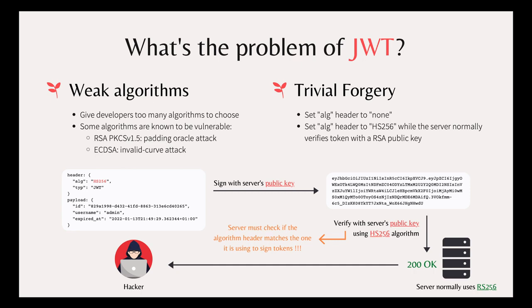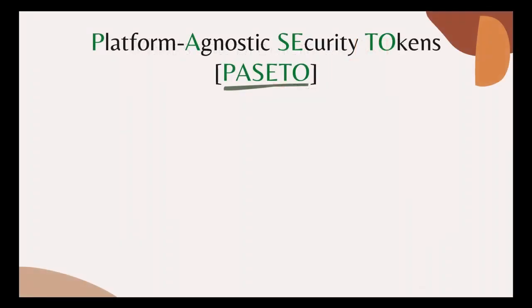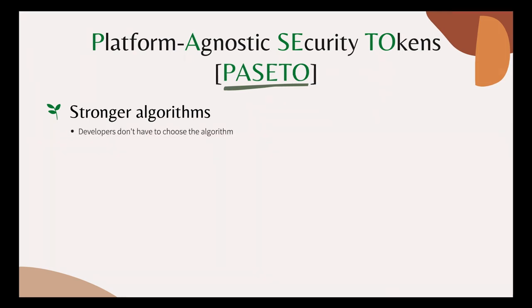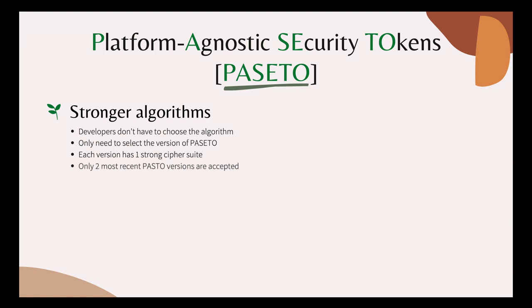PASETO, or Platform Agnostic Security Token, is one of the most successful designs that are being widely accepted by the community as the best secure alternative to JWT. It solves all issues of JSON Web Token by first providing strong signing algorithms out of the box. So developers don't have to choose the algorithm anymore. Instead, they only need to select the version of PASETO they want to use. Each PASETO version has already been implemented with one strong cipher suite. And at any time, there will be at most 2 latest versions of PASETO that are active. Right now, the 2 active PASETO versions are version 1 and version 2.